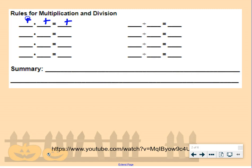If you are multiplying a positive number by a positive number, your answer is going to be positive. If you are multiplying a negative number by a negative number, your answer is also going to be positive.